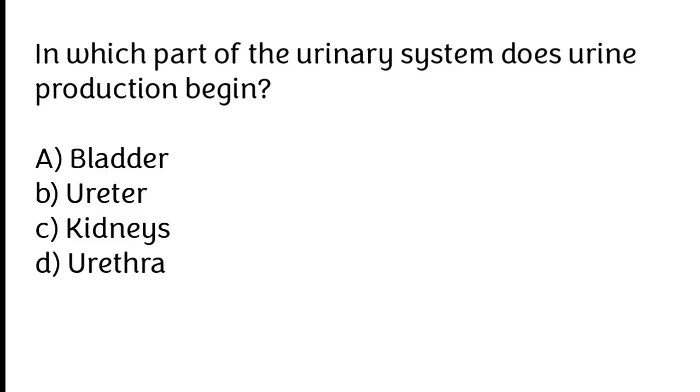The correct answer is option C. Kidneys is the part of the urinary system in which urine production begins.